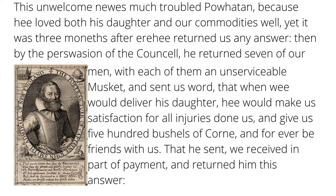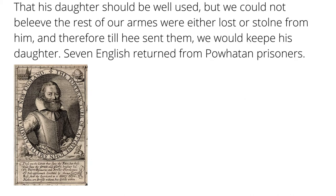That he sent we received in part of payment, and returned him this answer: that his daughter should be well used, but we could not believe the rest of our arms were either lost or stolen from him. And therefore, till he sent them, we would keep his daughter. So, Powhatan essentially tries to meet their demands, and the settlers respond by saying, well, our weapons are gone, and you mustn't have lost all of them, and so until we see them back, we're keeping Pocahontas.